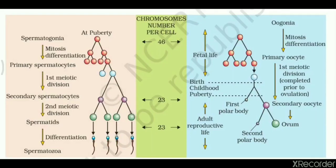Welcome everyone. Today we are looking at the differences between spermatogenesis and oogenesis. Spermatogenesis takes place inside an adult or mature male human, and oogenesis takes place inside a mature female human. The left hand side covers spermatogenesis and the right hand side covers oogenesis.